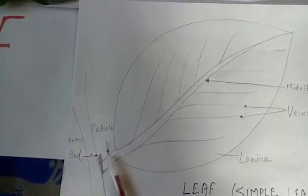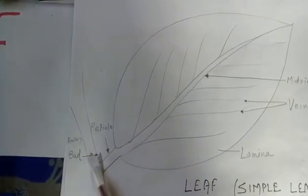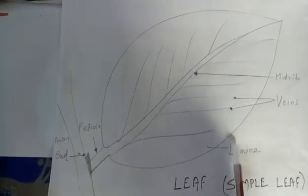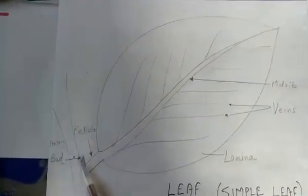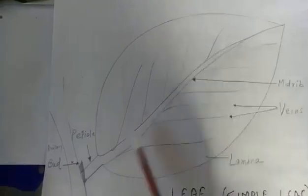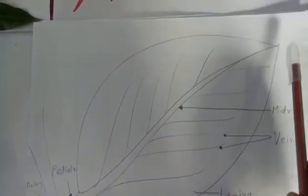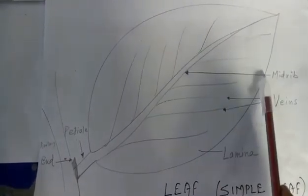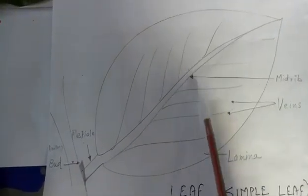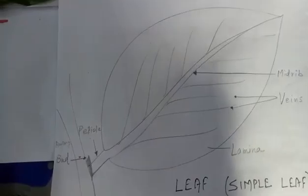The function of the petiole is to hold the flat portion to the stem or branch. Lamina is the flat portion of the leaf, except the petiole. Midrib comes out from the petiole and ends at the top of the leaf. Veins come out from the midrib — they are very fine lines. These are the four basic parts of a leaf.